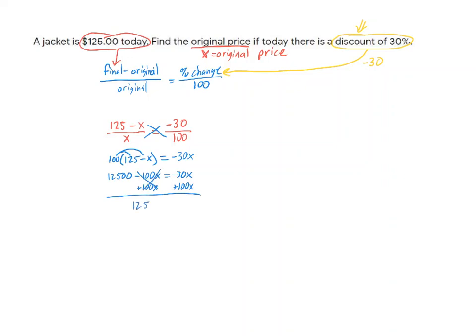I'll be left with 12,500 equals 100 minus 30, so that would be 70X. Then we divide 12,500 by 70, and that gives us 178.57.